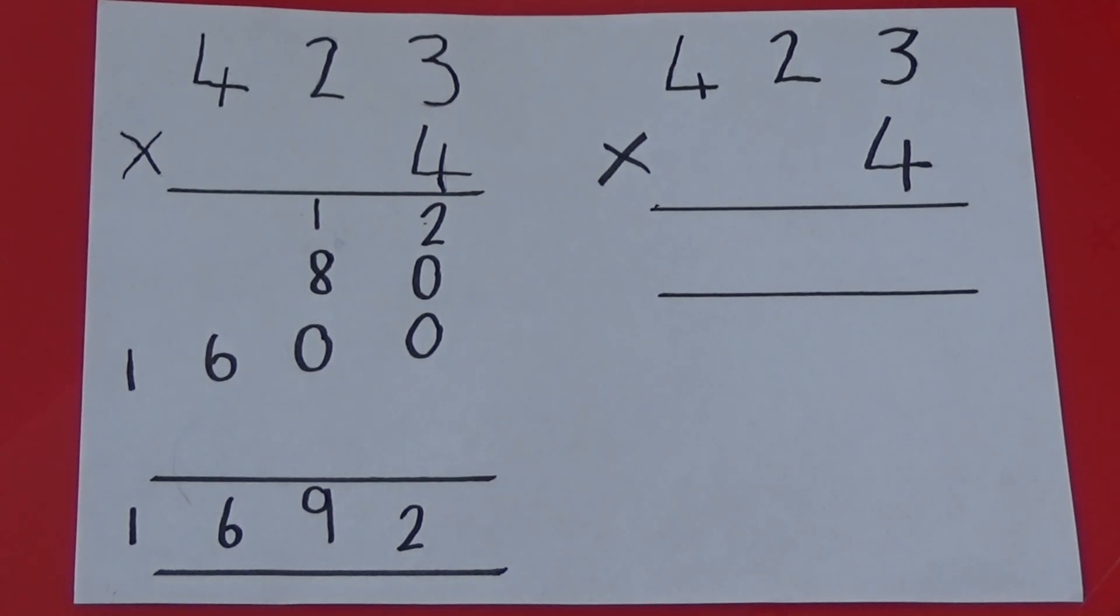3 multiplied by 4 equals 12 ones. We need to exchange 10 of the 12 ones for a ten, and put the 10 under the answer box of the tens column, and the 2 in the ones column.